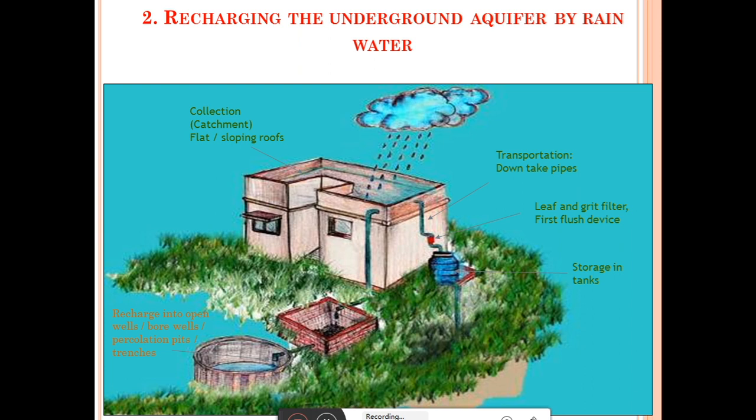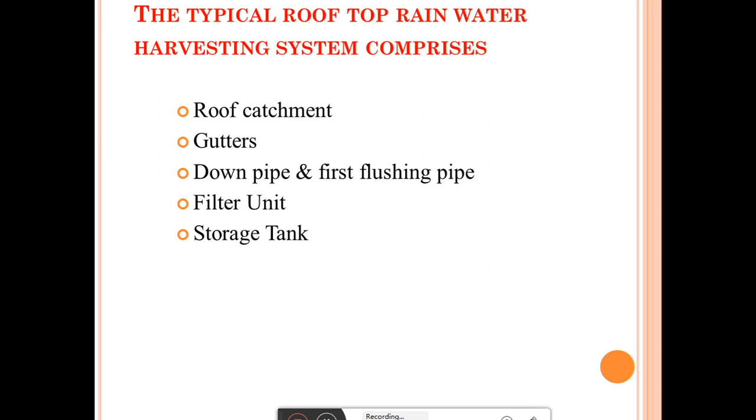When there is heavy rain, the harvested rainwater cannot be accumulated in the rainwater harvesting compartment, and there will be overflow out of the rainwater harvesting component. This excess water can be used to recharge the underground water table. This is the second method — recharging the underground aquifer.